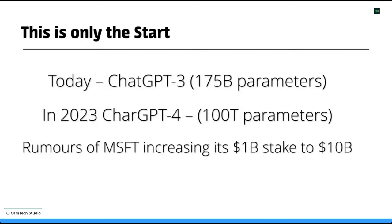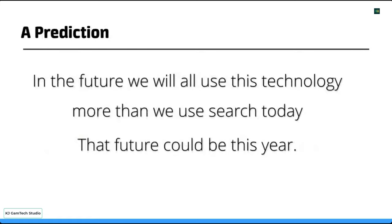There are rumors of Microsoft increasing its stake in OpenAI from 1 billion to 10 billion, and I think they're doing a deal about exclusivity. So I would expect this to start appearing inside Microsoft Office products probably this year. I also read today that Google and DeepMind are saying they'll have a competitor out this year. This is really moving very quickly.